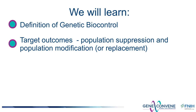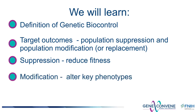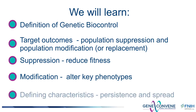We'll learn that population suppression can be achieved by introducing fitness-lowering genes or by creating incompatible genetic interactions within target populations. We'll learn that population modification targets and alters phenotypes of the target organisms and does not aim to reduce the size of the population. We'll learn that genetic biocontrol strategies are often classified with respect to their intended persistence over time and the degree to which they can spread spatially.